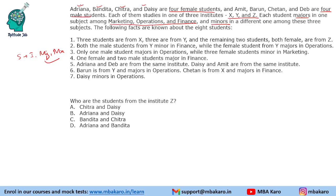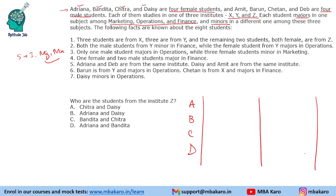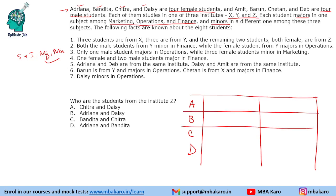We are given the student names A, B, C, D — easy to remember — plus 4 male and 4 female. So we will put the names as A, B, C, D. We will not make 8 rows; we will just make 4 rows — 4 for male students and 4 for female students. These are the female students and these are the male students, with columns for institute, major and minor.